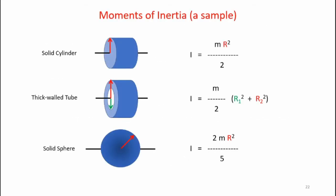Here are a few examples of some simple shapes and equations for their inertias. You have a solid cylinder, I equals mr squared divided by two. You see a thick walled tube in its equation, and a solid sphere in its equation for inertia. For this video, we're going to be focusing on the thick walled tube and the solid sphere for our experiment.